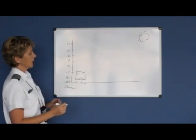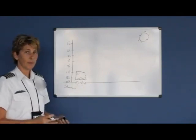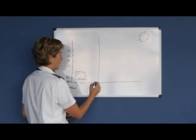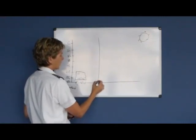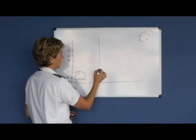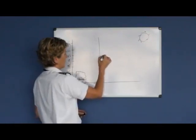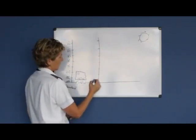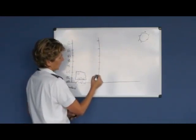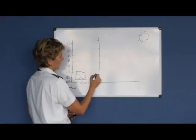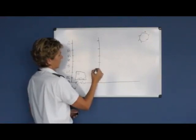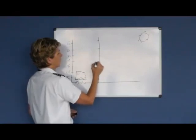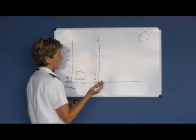Now let's look at an example where the atmosphere or lapse rate was non-standard for some particular reason. Let's say that we started at 15 degrees, and as we went up, we dropped more than the normal 2 degrees Celsius per thousand feet — so the temperature went to 12, then 8, then 5, 1, minus 3, or something like that.